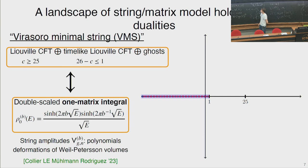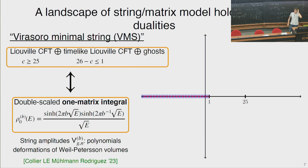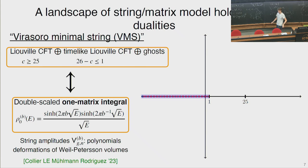Now let's move on to the new models. There are more matter theories than just the minimal models. One is known as time-like Liouville theory. You can couple Liouville theory to time-like Liouville theory, which exists for any central charge less than one—any real central charge. You add ghosts to define a string theory. This is a tachyon-free bosonic string theory. Is there also a dual matrix model? The answer is yes—a one-matrix model. The density of states takes a more complicated form: it's no longer polynomial, and it grows exponentially fast at high energies. The string amplitudes turn out to be deformations of Weil-Petersson volumes.